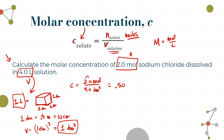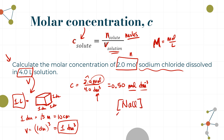Two divided by four is 0.5, but keeping two sig figs I need 0.50. My unit label: moles in the numerator and dm³ in the denominator, written as mol dm⁻³ — that negative exponent shows it's in the denominator. Moles per cubic decimeter equals moles per liter equals molar. So the concentration is 0.50 mol dm⁻³. We can write this as [NaCl] = 0.50 mol dm⁻³, where square brackets indicate concentration.